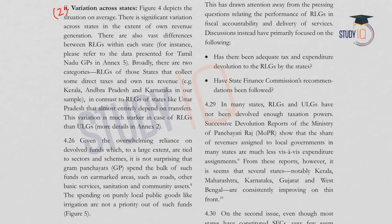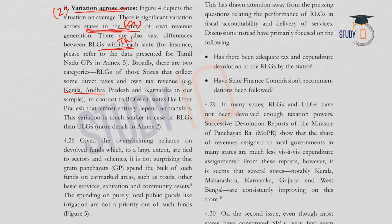There is variation across states in revenue generation — different states perform differently, and within each state, individual local bodies also perform differently, as seen in Tamil Nadu. Better performing states include Kerala, Andhra Pradesh, Karnataka, etc. Some states like Uttar Pradesh are poorly performing.